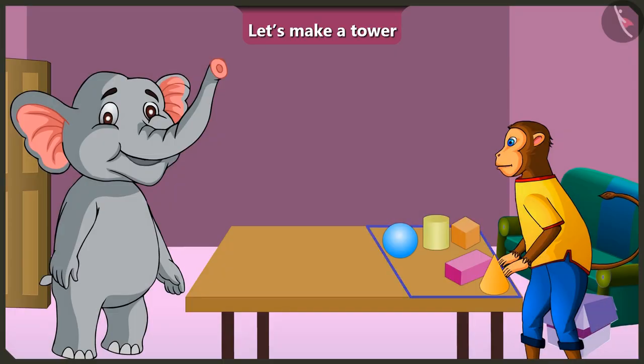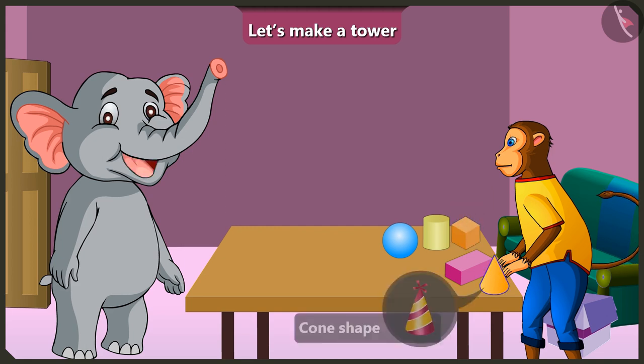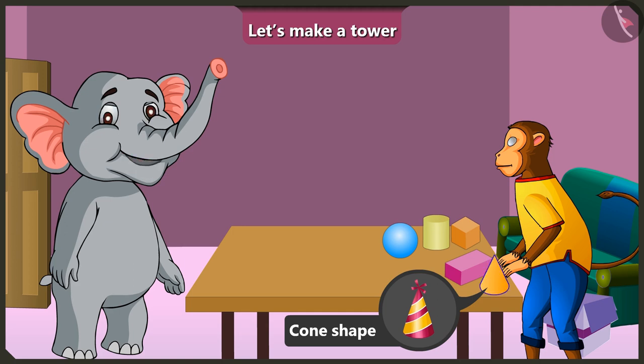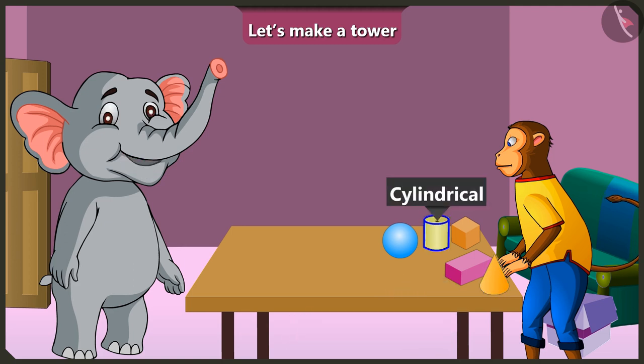Can you name these solid shapes? Yes, this box is actually of a cuboid shape. This looks like a cube. This joker's cap is cone-shaped. This is cylindrical and this is round like a ball. Oh wow Appu, you know everything.